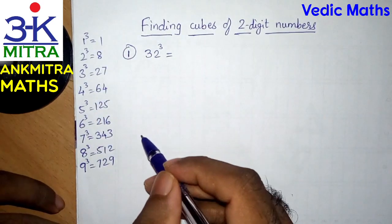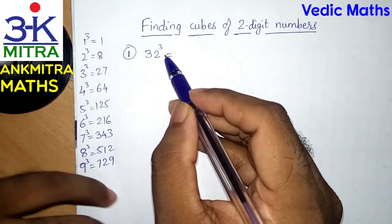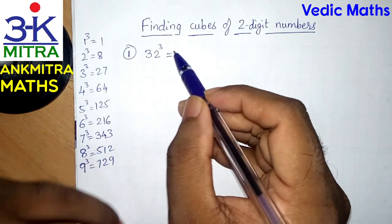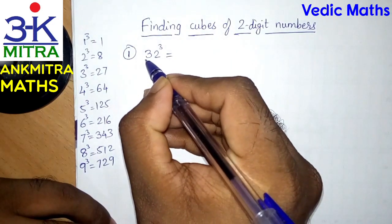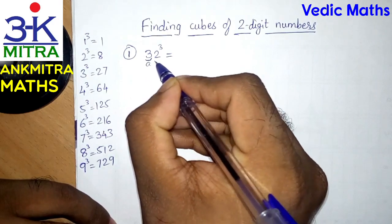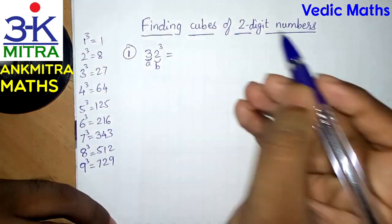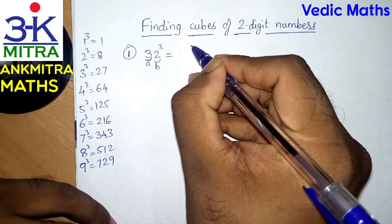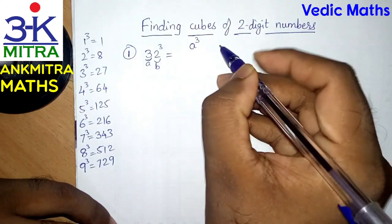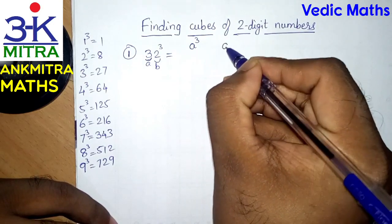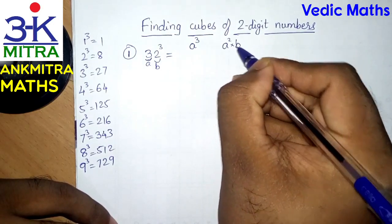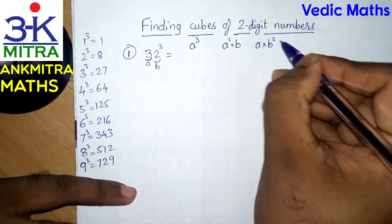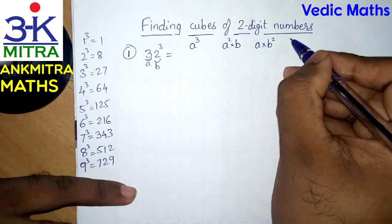So we have all the one digit cubes ready with us. Now we will start with the first example. I have written down 32 cube. To find 32 cube, we will use 3 as A and 2 as B. The method is: we will first write down A cube, then A square multiplied by B, then A multiplied by B square, and the final number will be B cube.